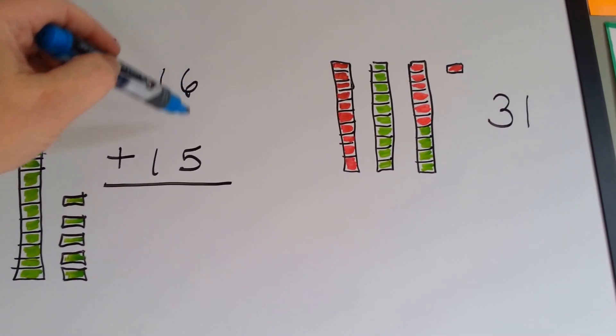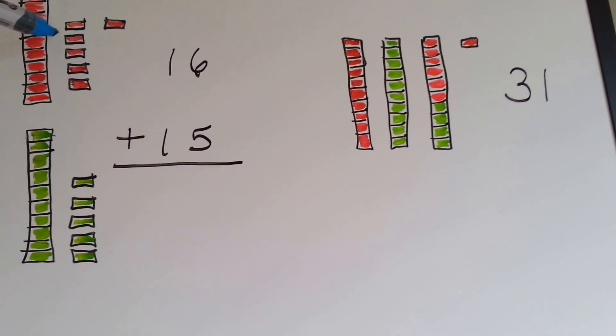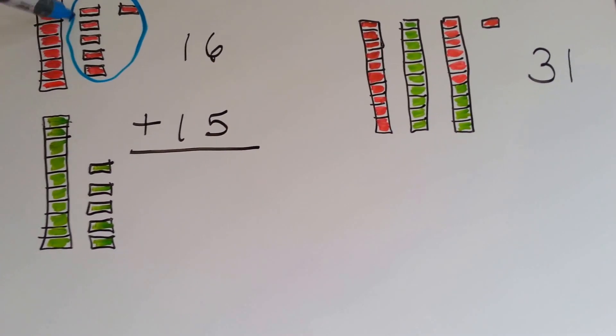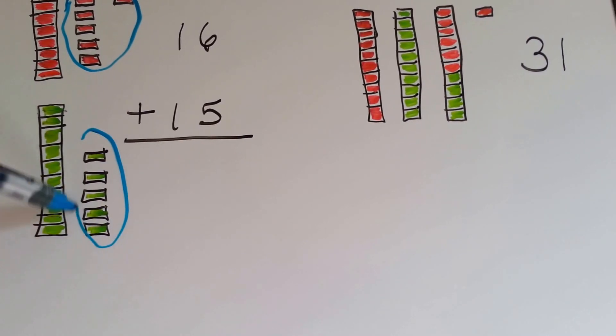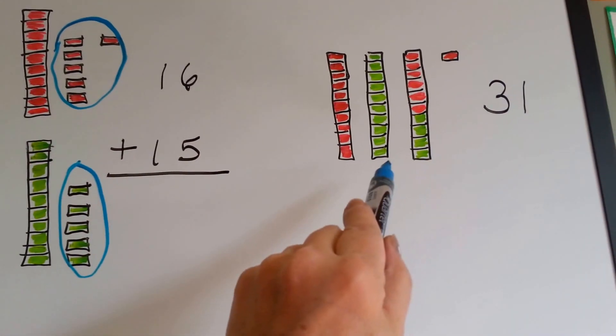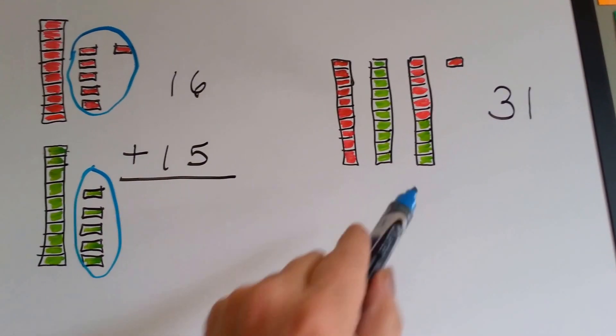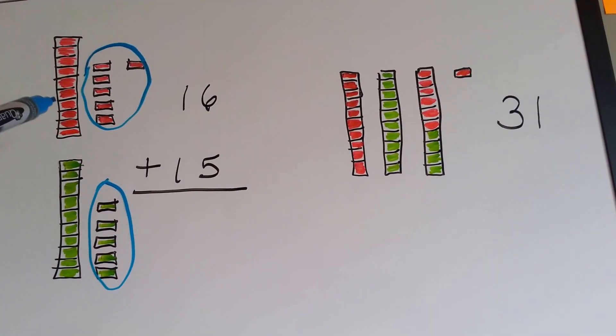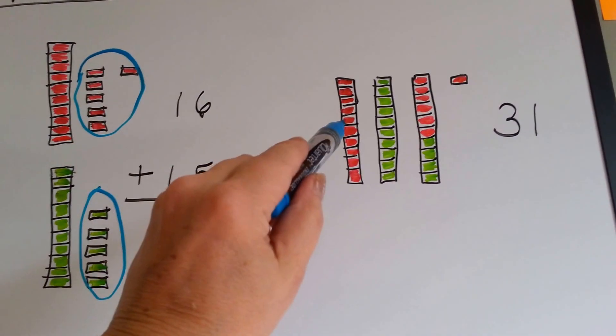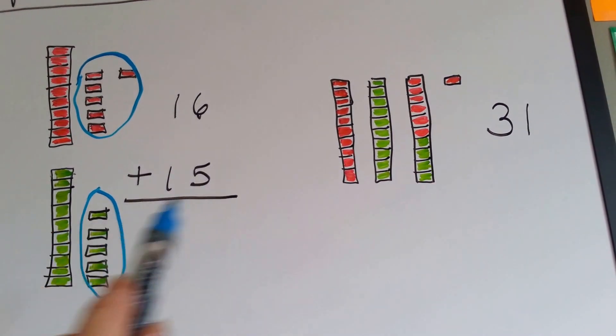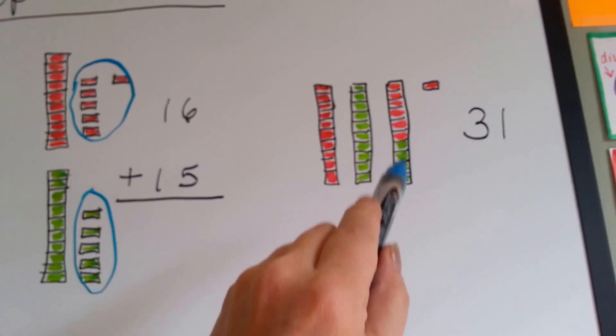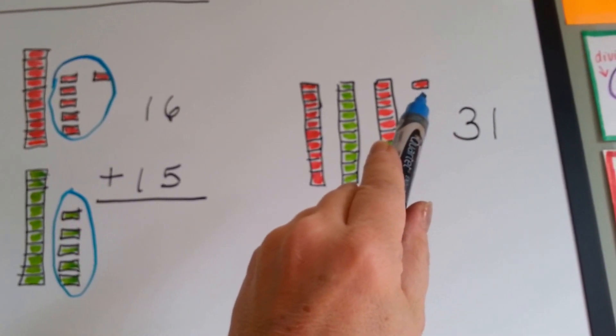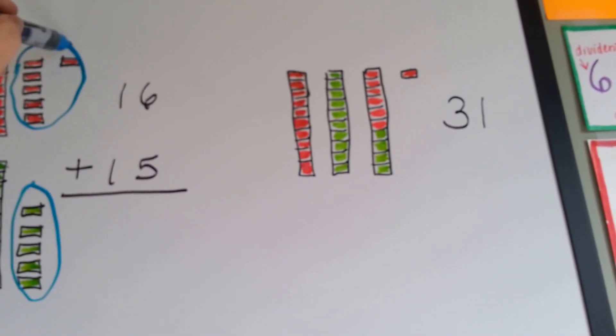When you add the 6 and the 5 together, that's adding this 6 and this 5 together to make a new 10. See? We've got this 1 here, we've got this 1 here, and these and these make this and the 1 left over. See the 1 left over right here?